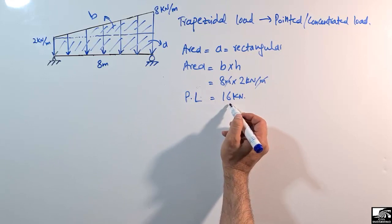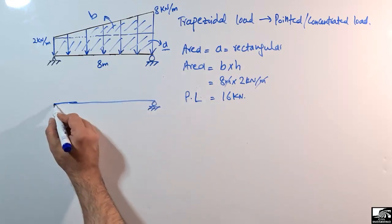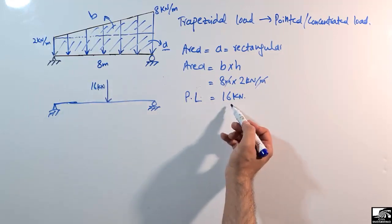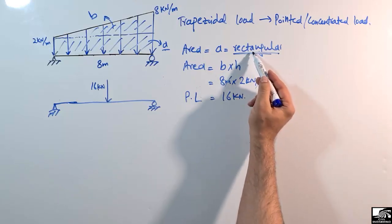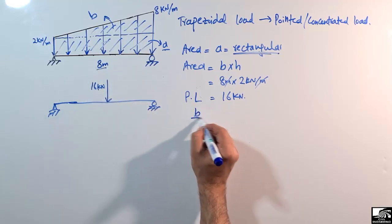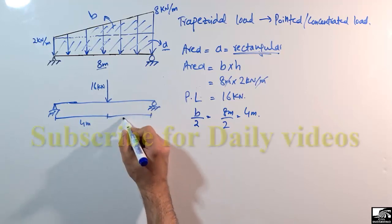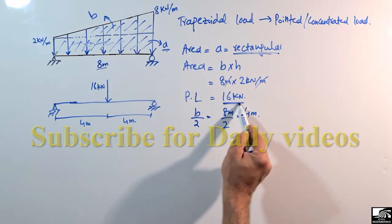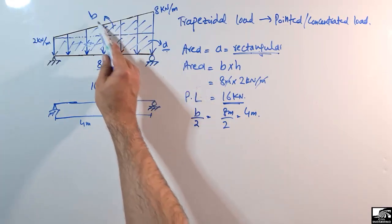In the free body diagram, this 16 kN pointed load acts at the center of the beam. It acts at the center because for a rectangular load, the equivalent concentrated load acts at the centroid of the rectangle. The center of the rectangle is at width divided by 2, which is 8/2 = 4 meters. So it acts 4 meters from each end.